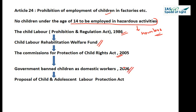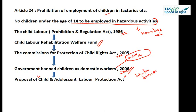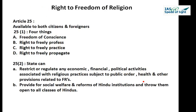In 2016, the government banned children as domestic workers, also removing the restriction on under-14s from domestic work. A proposal has been made for a Child and Adolescent Labour Protection Act, introduced in a winter session of Parliament, which would further strengthen provisions regarding the prohibition of employment of children in factories. This completes the third fundamental right — the right against exploitation.